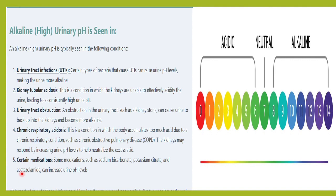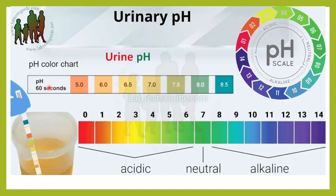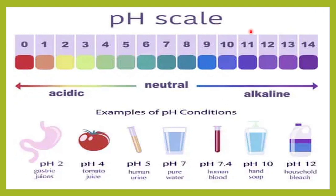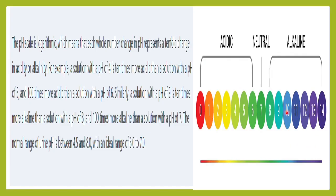To recap: the urinary strip is read after dipping in urine for 60 seconds. The reagent strip ranges from 4.5 or 5 to 8. Around pH 7 is neutral, below 7 is acidic, and above 7 is alkaline. Urine is always a bit acidic. Gastric juices have a pH of about 2, blood is 7.4 (slightly alkaline), and household bleach is 12 (very alkaline). Remember that urine pH follows a logarithmic scale.